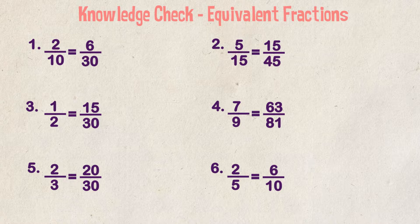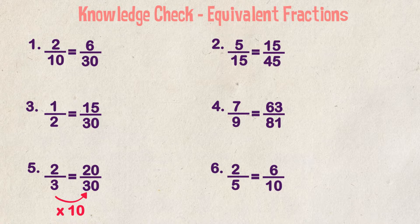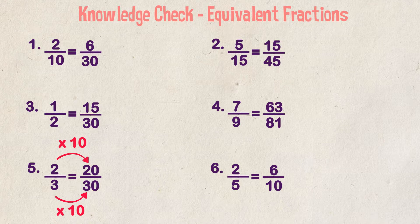For the next two examples, I want you to tell me if they're equivalent or not. Example five, are these two fractions equivalent? Is two thirds equal to 20 over 30? This is an easy one as we know that if we multiplied 3 times 10, it equals 30 and 2 times 10 is equal to 20. So yes, the two fractions are equivalent.